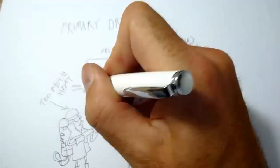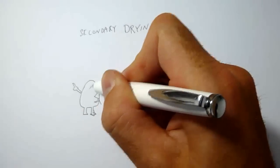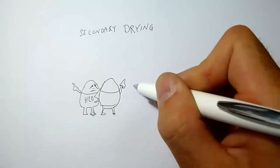Secondary drying: During this phase, there is a final attempt to remove remaining water molecules since all the ice should have been removed in the primary phase.